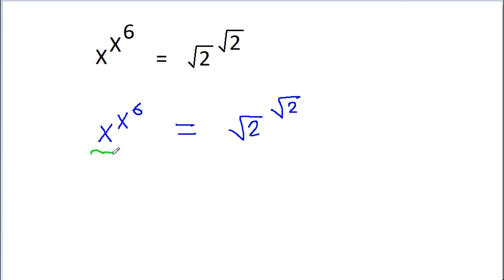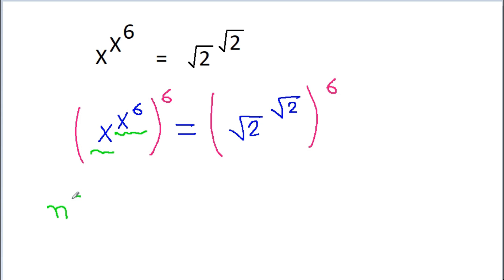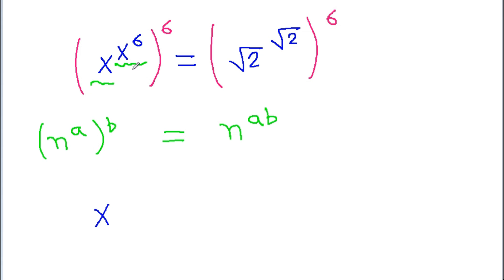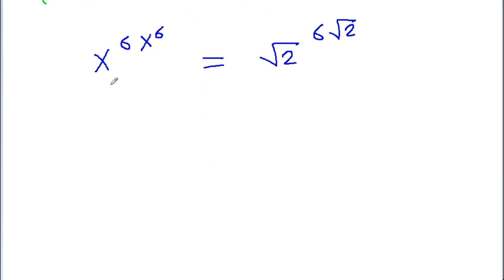We have x power x power 6, and if we raise both sides to the power of 6, then we know that for any number n, n power a times power b is equal to n power a into b. So we get x power 6 into 6, which is 6 times x power 6, is equal to root 2 power root 2 into 6, which will be 6 root 2. And we know that any number n power a into b is equal to n power a whole power b.